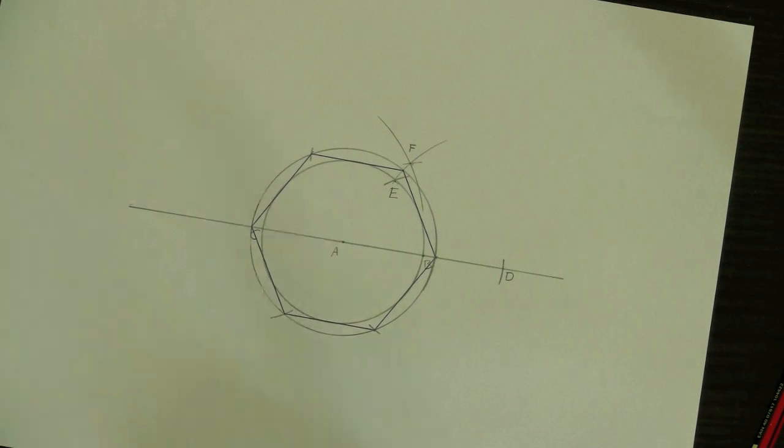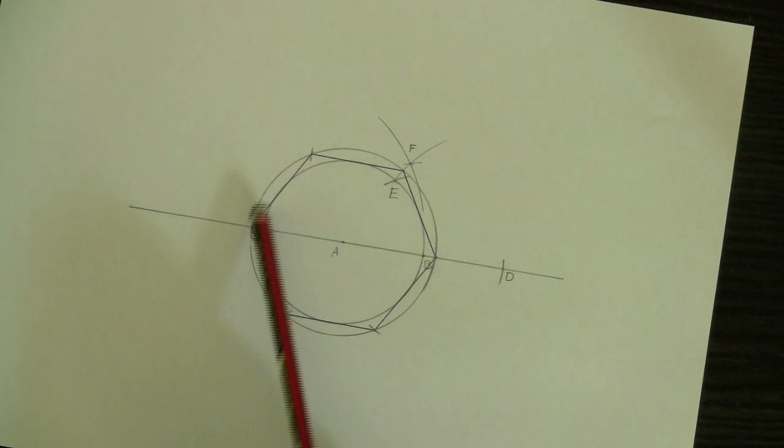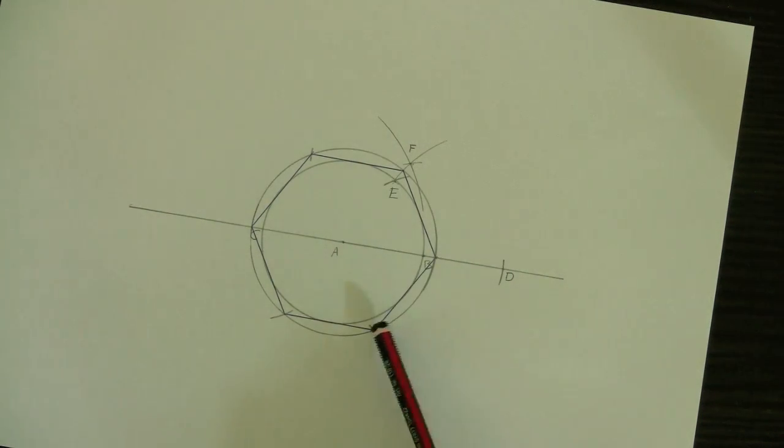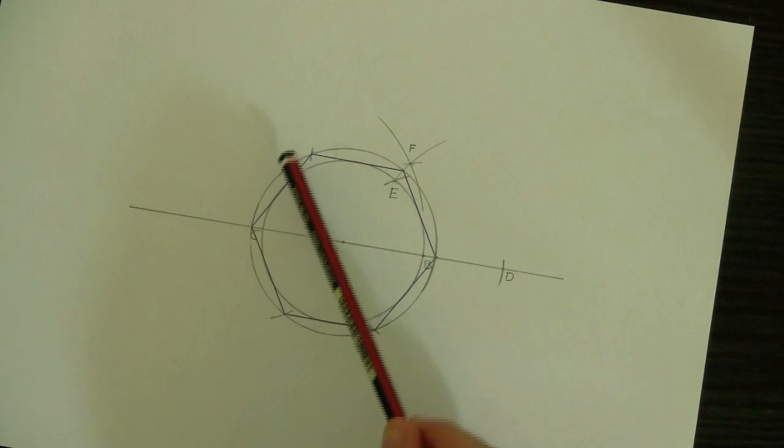And there it is. A regular hexagon, whose edges just touch the circle that we started with.